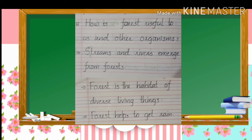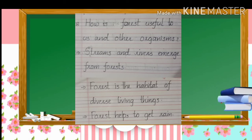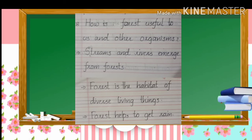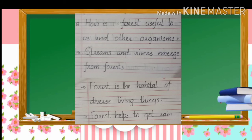Second point: forest is the habitat of diverse living things. In a forest, different types of plants and creatures are there. Next, the third point: forest helps to get rain.